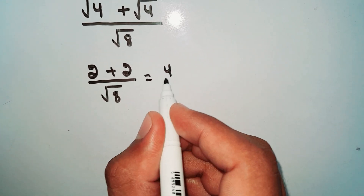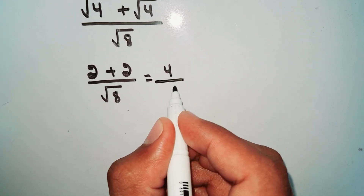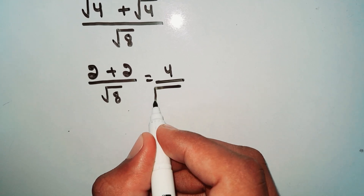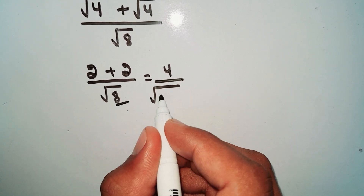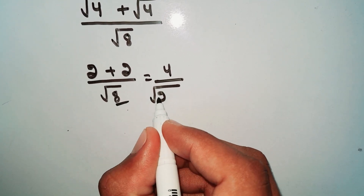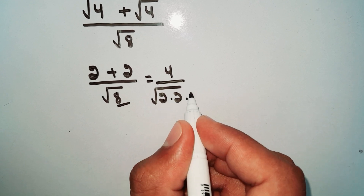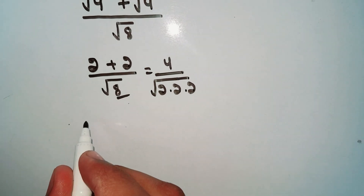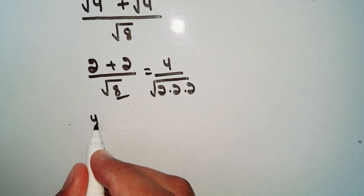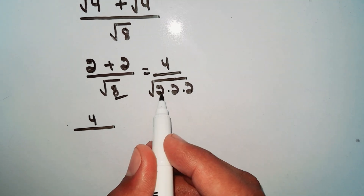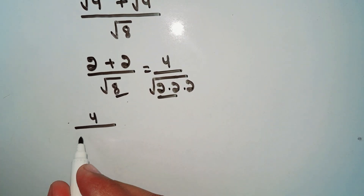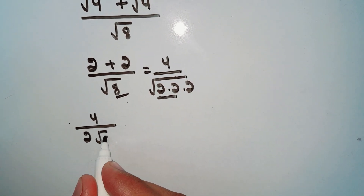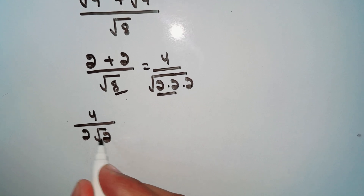Now 2 plus 2 equals 4, so we have 4 upon square root of 8. We take the factors of 8: 8 is 2 multiplied by 2 multiplied by 2. So the 2 comes outside, giving us 2 root 2 in the denominator.